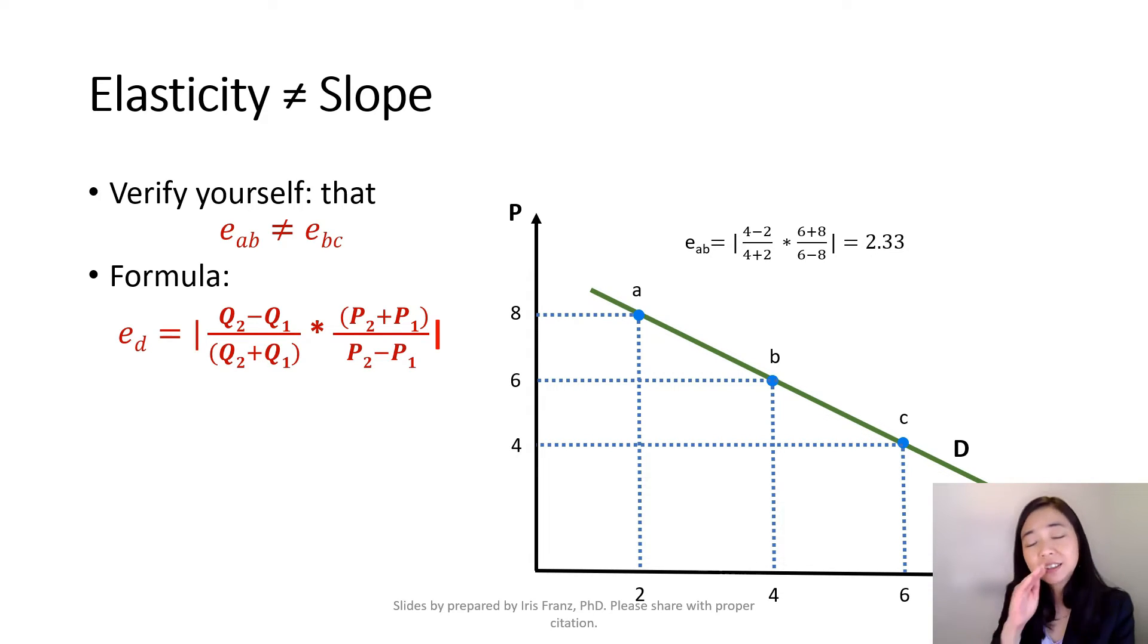However, on the same demand curve here, we have the same demand curve with the same slope. But on the demand curve, the price elasticity of demand from point A to B is different from the price elasticity of demand from point B to C.